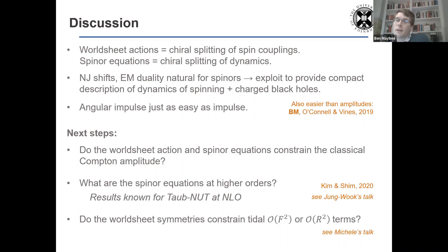There are results known for Taub-NUT, next leading order, one loop, which I think Jung-Wok Kim might be talking about on Friday. So it would be very interesting to make contact with that work. But to do so, we'd need to incorporate order F squared or the curvature squared terms into the spinor equations. And for that, we need to constrain those higher order terms of the worldsheet action. And some work incorporating these terms has already been done by Michelle and other authors in the audience. And she might be highlighting on Wednesday, but that we look very much look forward to continuing work on in the future. So thank you very much. Happy to take any questions.